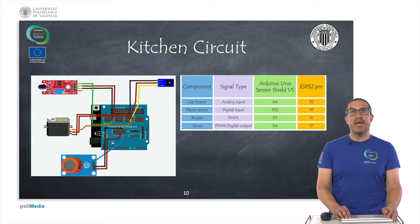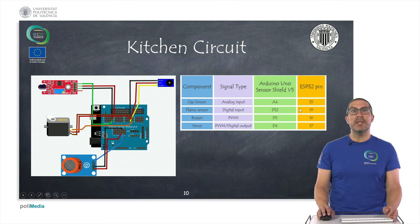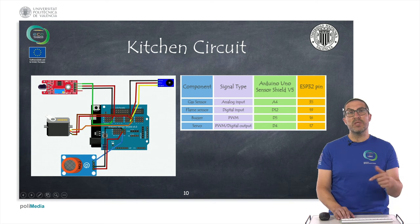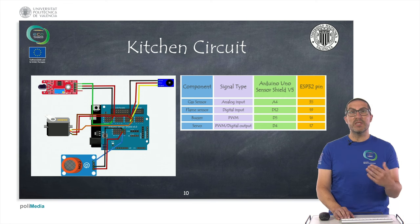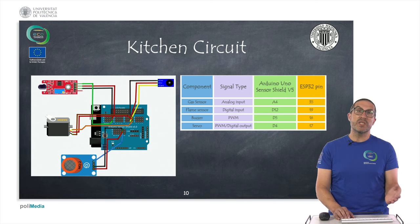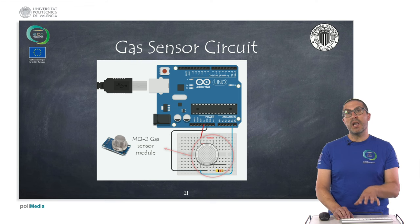This is the proposed circuit connection diagram for the kitchen. We have the gas sensor connected to an analog pin, the flame sensor connected to a digital input from the Arduino's perspective, the buzzer connected to a PWM signal, and the servo connected to a digital output signal. These are the equivalent Tinkercad circuits that we will use throughout the presentations.